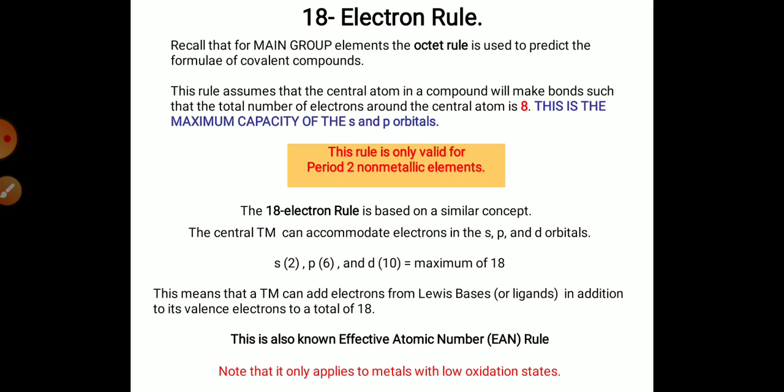As we all know that the main group element obeys the octet rule, which is used to predict the formula of covalent compounds. This rule assumes that the central atom in a compound will make bonds such that the total number of electrons around the central atom is 8. This is the maximum capacity of the s and p orbitals. This rule is only valid for Period 2 non-metallic elements.